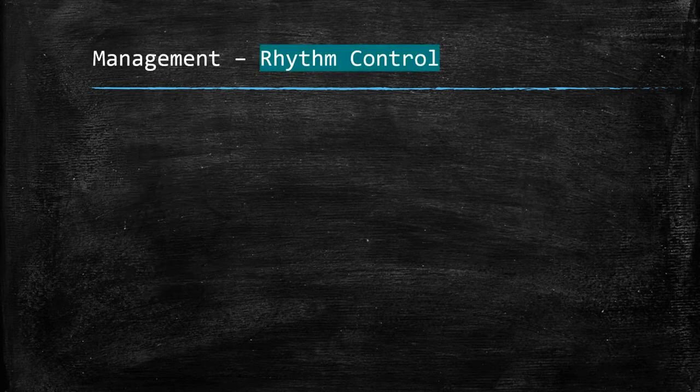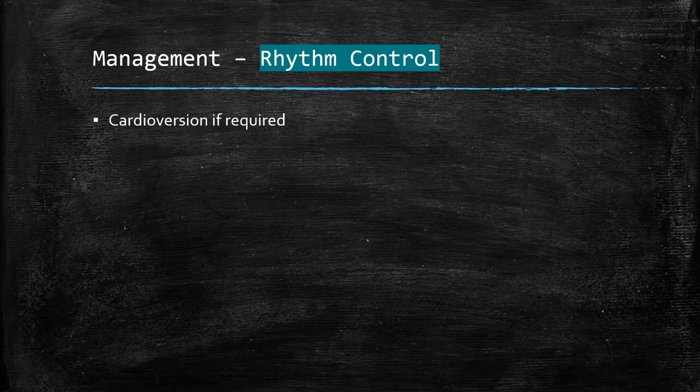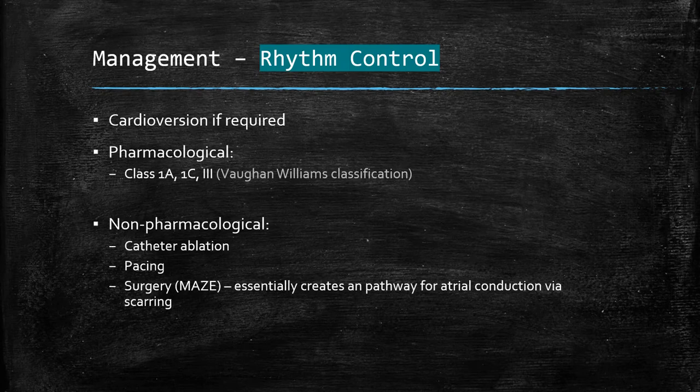Rhythm control, on the other hand, attempts to restore and maintain sinus rhythm. This can involve cardioversion, or pharmacological interventions with class 1A, 1C, and 3 drugs. Non-pharmacological interventions include catheter ablation, pacing, and surgery. The main surgical approach aims to carve a pathway for atrial conduction by cauterization, thereby preventing fibrillation.